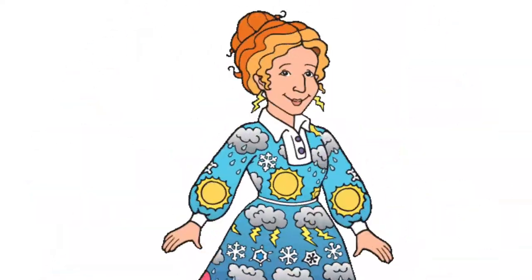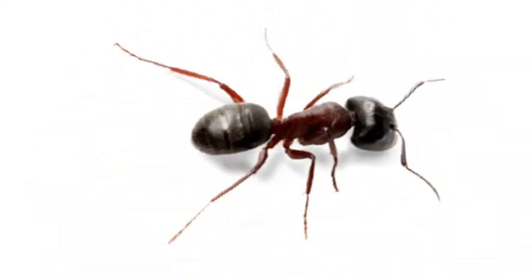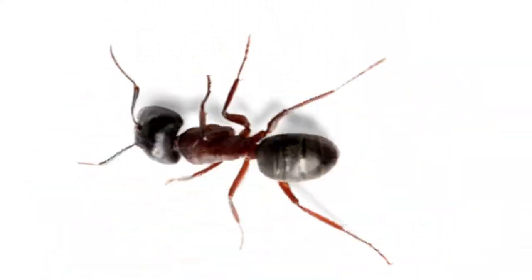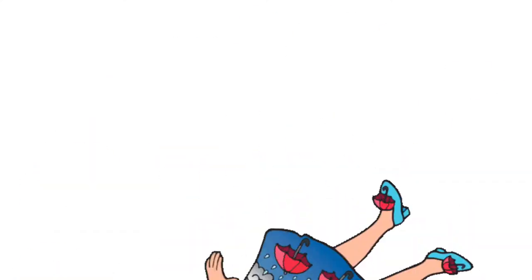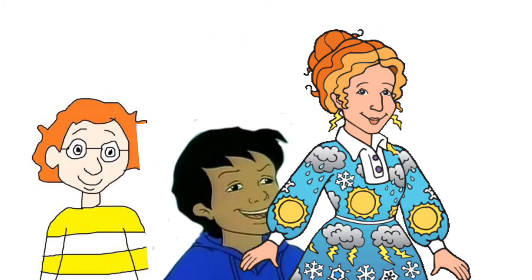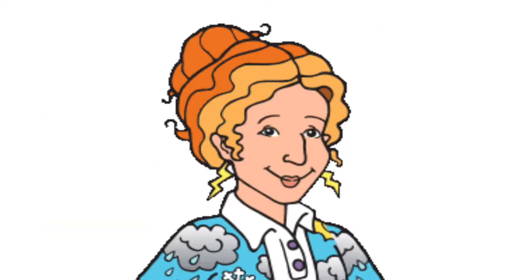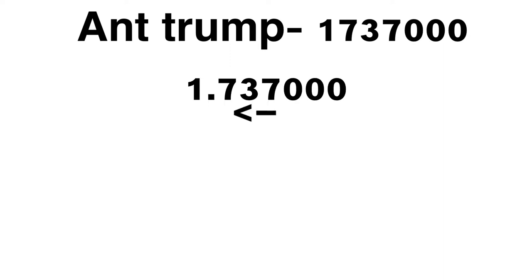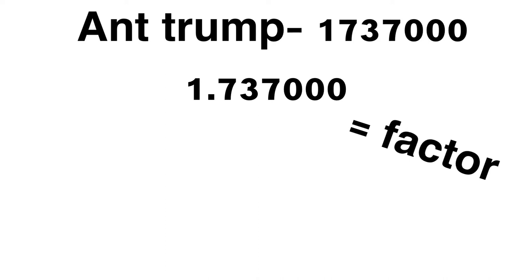Oh no, what's wrong with Trump? Donald Trump turned into an ant! Let's measure it. Donald Trump is now 1,737,000 meters long. To turn that number into scientific notation, move the decimal to the right until the decimal is below 10.